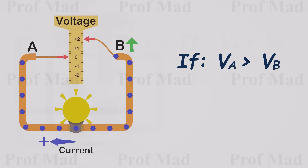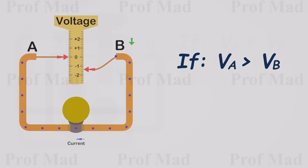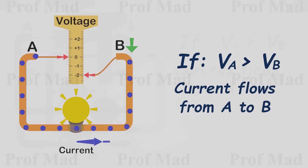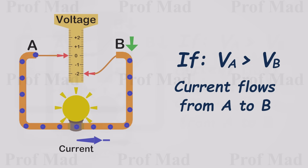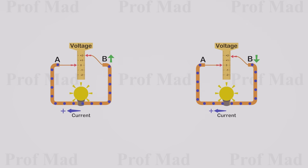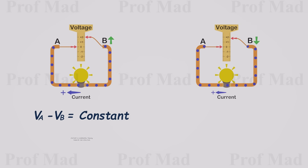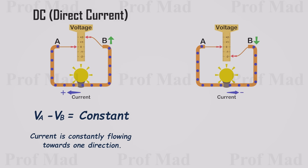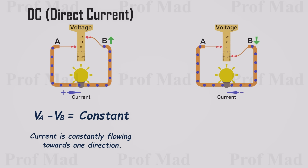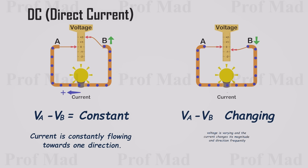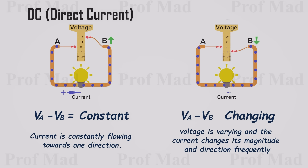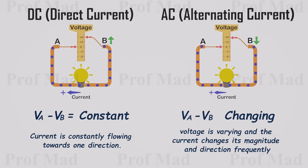Conversely, if the voltage at B drops below that of A, current will flow from A to B. When the voltage difference between A and B remains constant, we call it direct current. When the voltage varies and current changes in magnitude and direction frequently, we refer to it as alternating current.